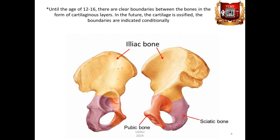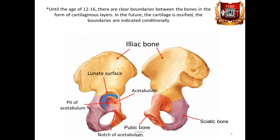Bodies of the bones are jointed in the acetabulum, which is located on the outer surface of the pelvic bone. The acetabulum serves to connect the femoral head to the pelvic bone. It is distinguished into the central part fossa acetabuli and the periphery, where the net surface facies lunatum acetabuli is located. There is a notch, incisura acetabuli, in the lower part of the acetabulum.